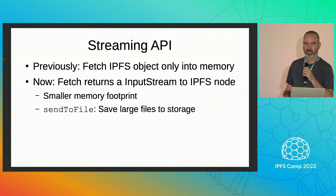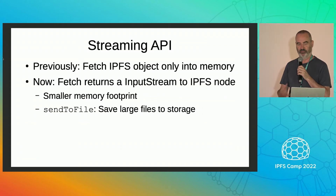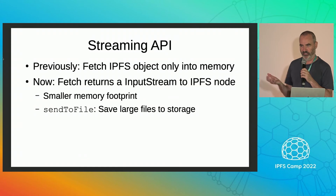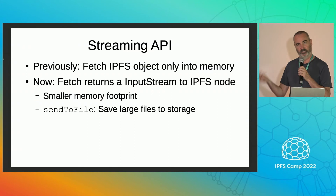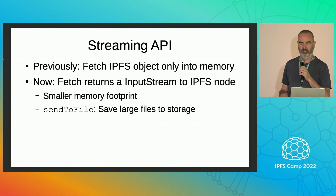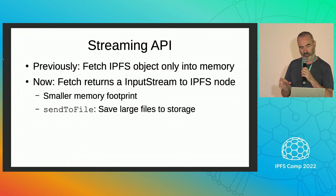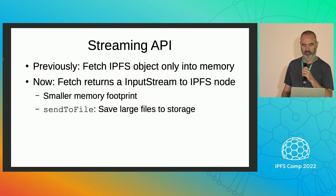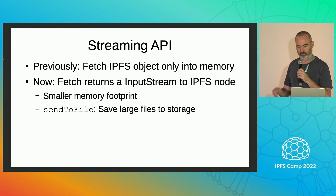What does the streaming API mean? Previously, when you fetch an IPFS object, it had to be pulled into memory — the entire object. Now, fetch still uses the Kubo API, but the call returns an input stream for Android and iOS, so the application can create a small memory buffer and not use up much memory on the phone. For example, you could use send-to-file to fetch a large IPFS object and save it to the phone without using too much memory.